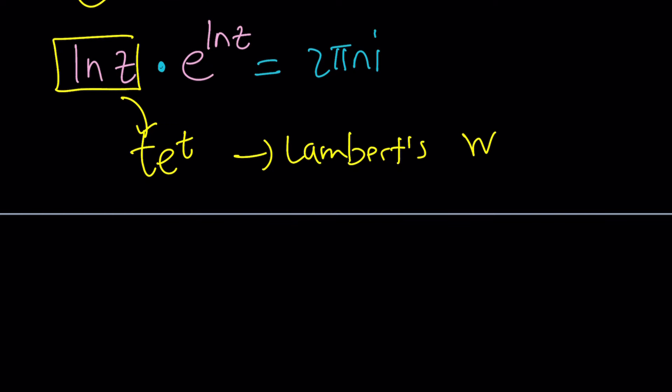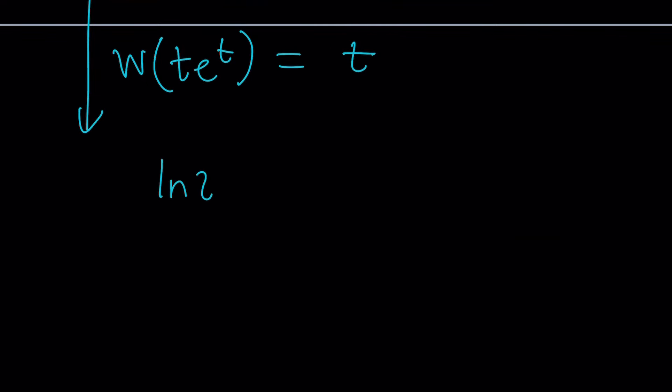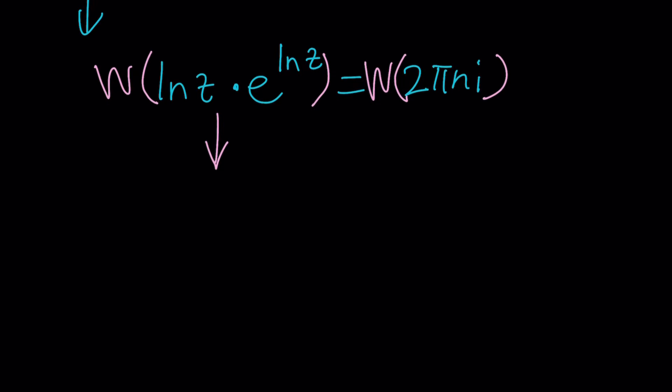Great, so if you said Lambert you got it. If not, then it's okay, hopefully you'll learn something new today. Now Lambert's W function is basically the inverse function for t e to the t. When you apply it on t e to the t you get t. Of course there are multiple branches and so forth, but again we're gonna keep it simple and write this equality one more time: ln z times e to the power ln z equals two pi n i. We're gonna W both sides with our special function and we're gonna get an output of ln z from here.